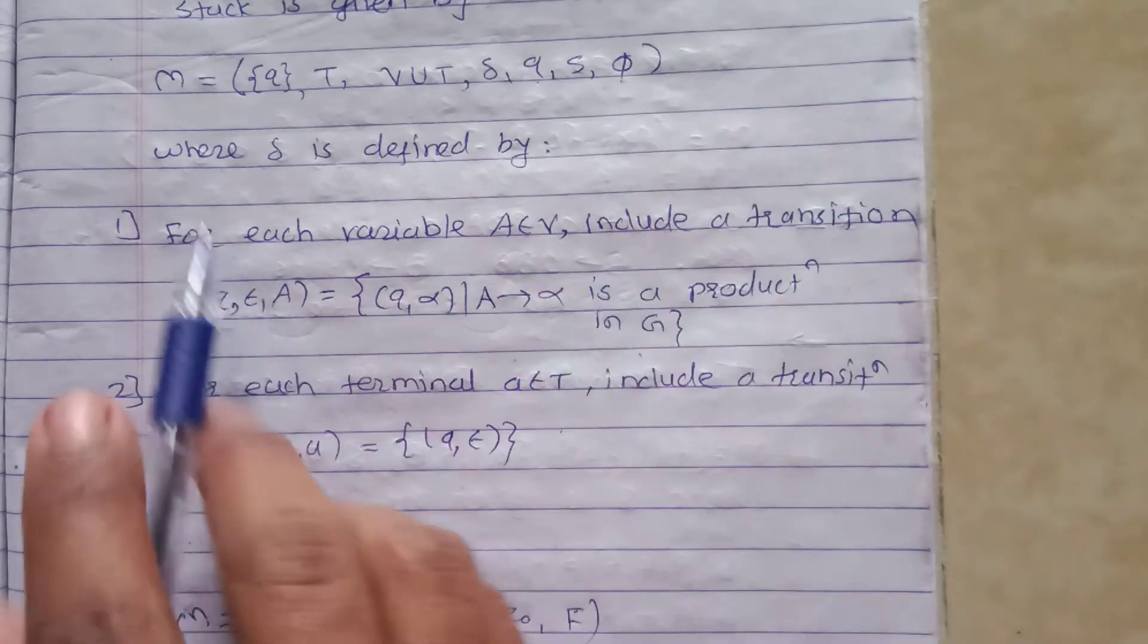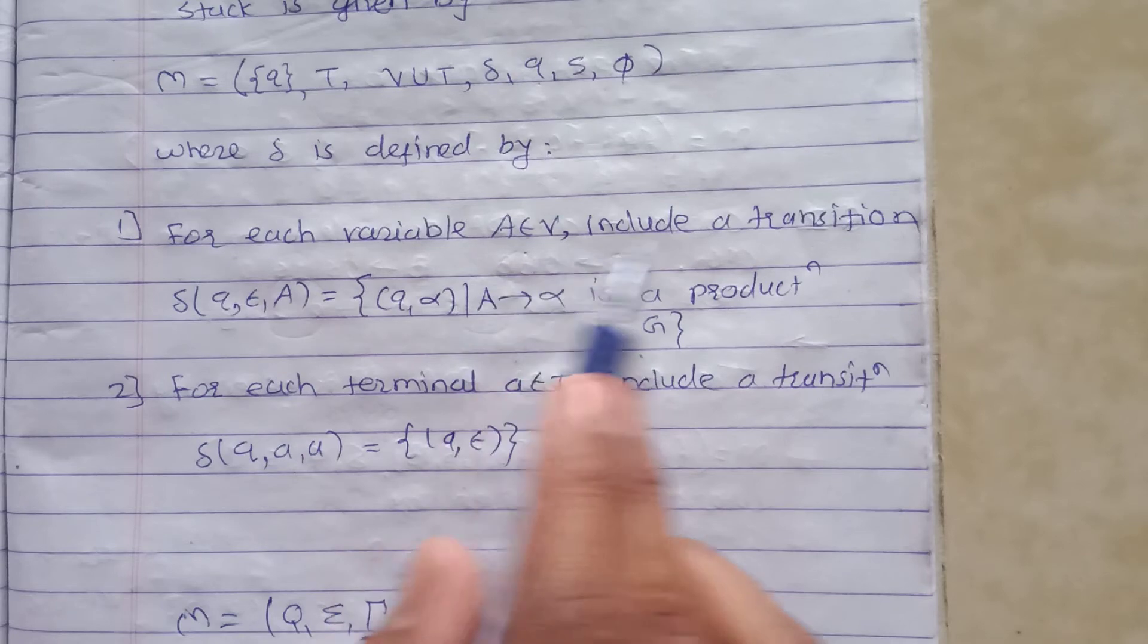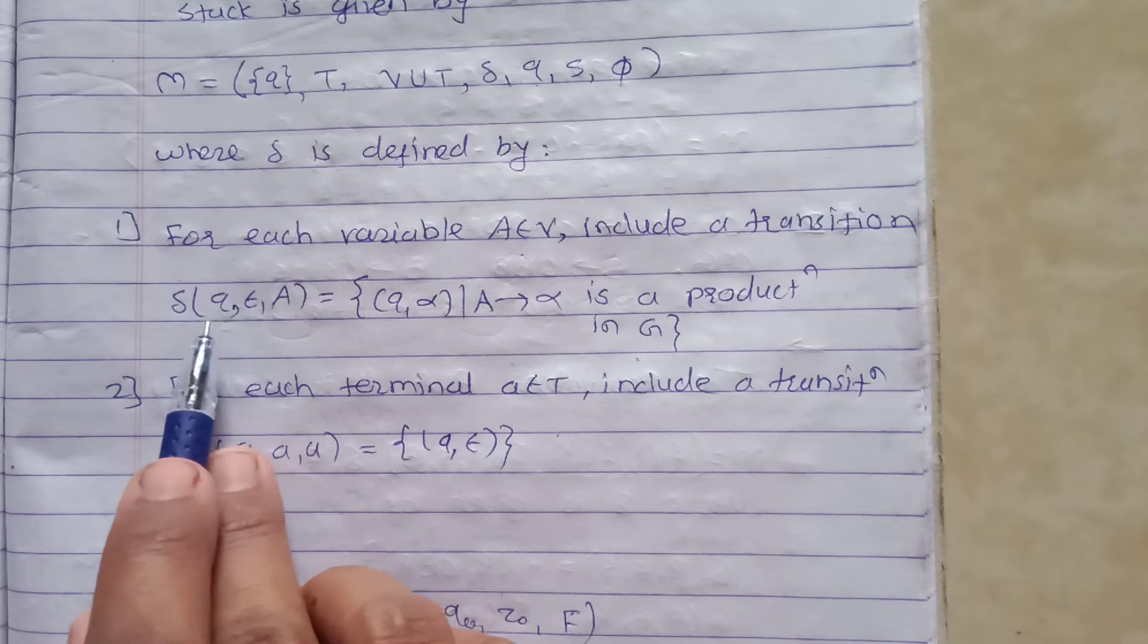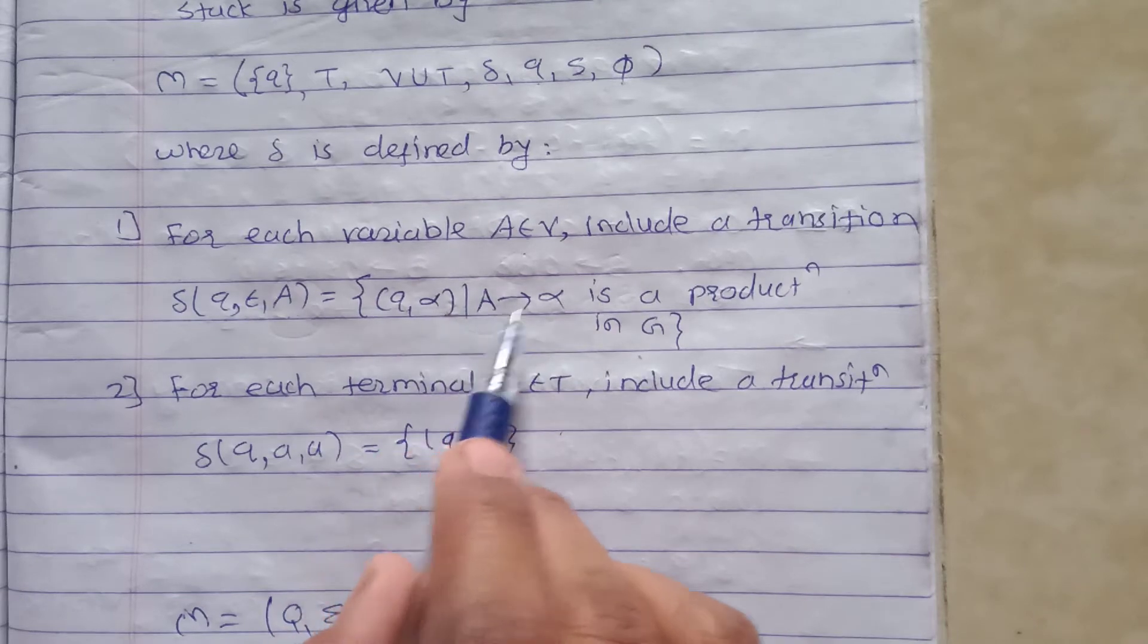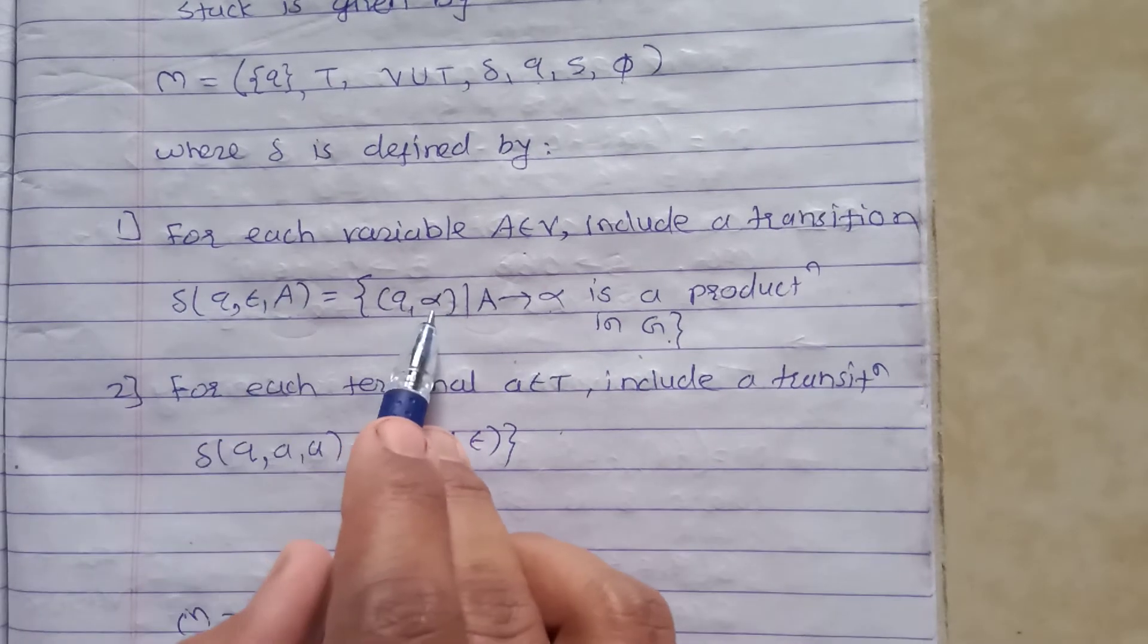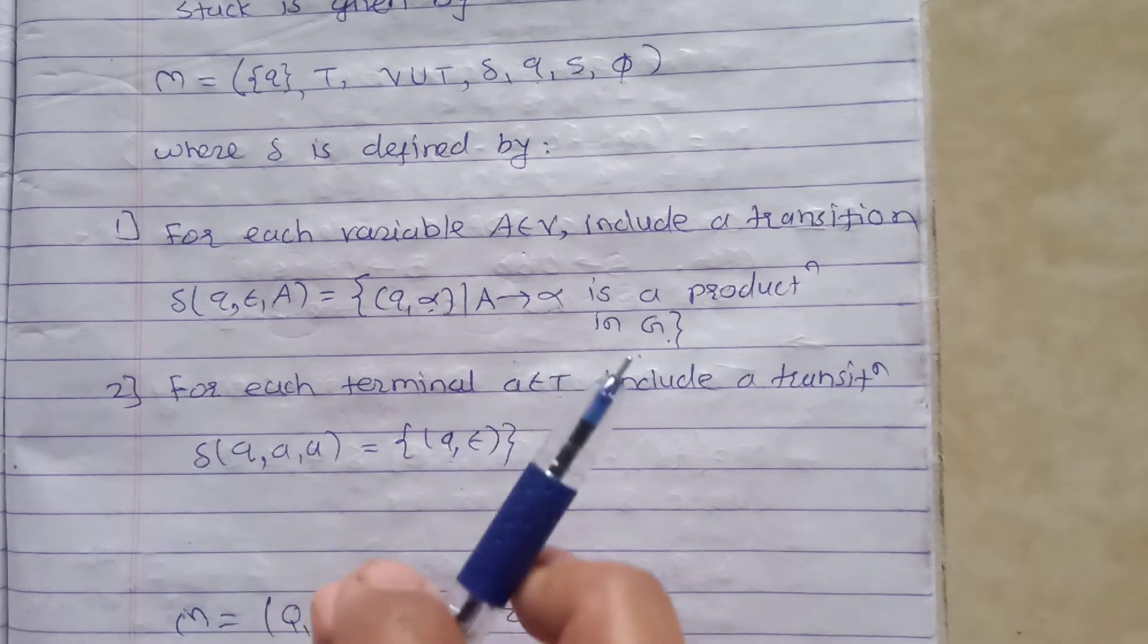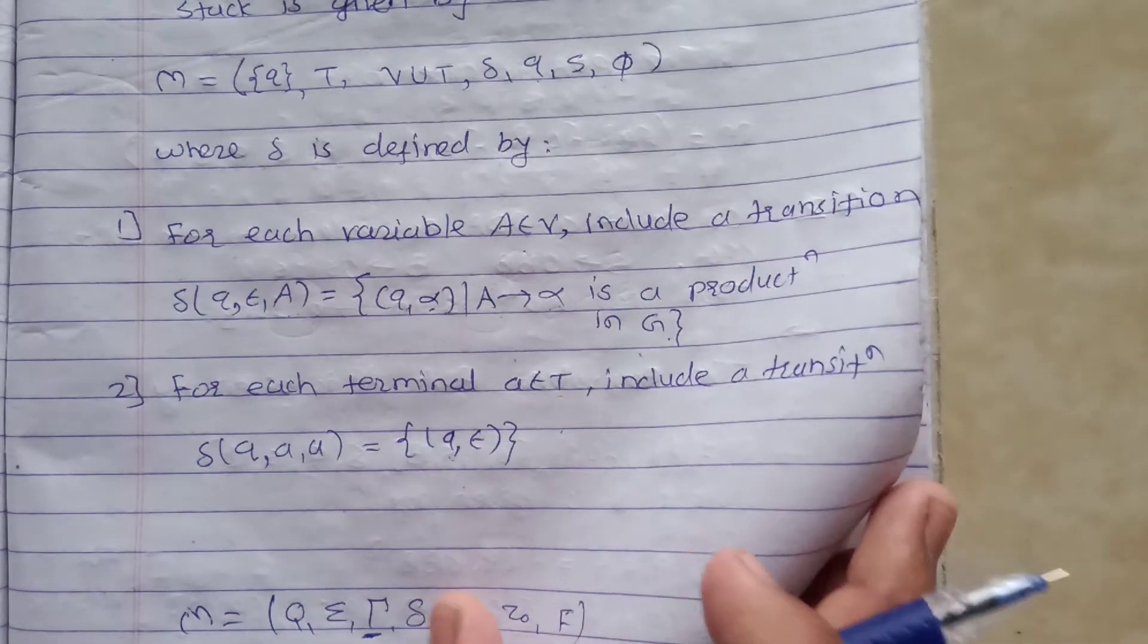Where delta is defined by: for each variable A belongs to V, include a transition δ(q, ε, A) equals (q, α) such that A produces α is a production in grammar. For each terminal a belongs to T, include a transition: δ(q, a, a) equals (q, ε). It's very easy, it will be clear to you when we take the example.